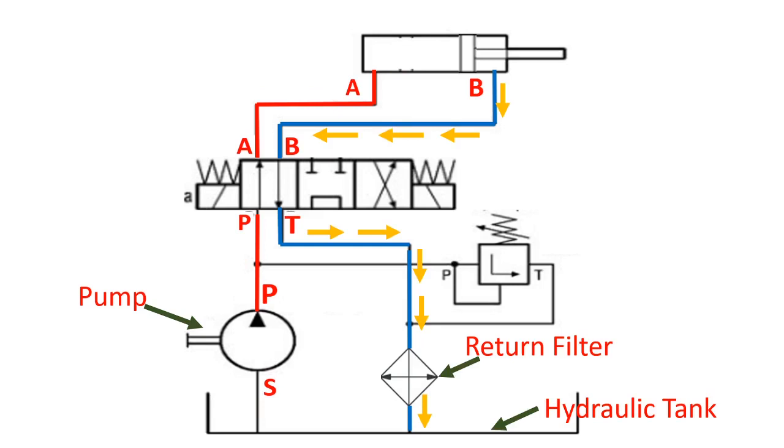And the oil of the piston side port B will automatically return to the oil tank via port B of the cylinder, through the directional valve, through filter, and back to the oil tank.